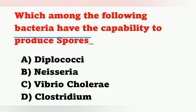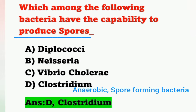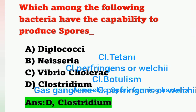The next question: which among the following bacteria have the capability to produce spores? Options: Option A, Diplococcus; Option B, Neisseria; Option C, Vibrio cholerae; Option D, Clostridium. Spore-forming bacteria are Clostridium — Option D is the correct answer. Clostridium is an anaerobic spore-forming bacteria. Clostridium species include Clostridium tetani, Clostridium perfringens (or Clostridium welchii), and Clostridium botulinum. Clostridium perfringens/welchii causes gas gangrene.